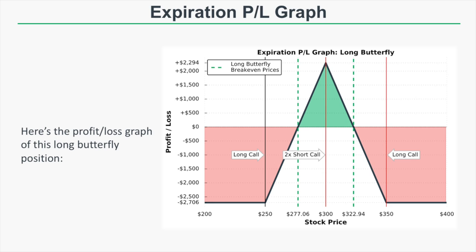The maximum loss is the debit paid of $27.06, or $2,706 per butterfly spread. That maximum loss occurs if the stock price is below the long call strike of $250 or above the upper long call strike of $350. Below $250, every call expires worthless. Above $350, the long 250/300 call spread is worth $50 and the short 300/350 call spread is also worth $50, netting to zero — so we lose the debit paid of $2,706.